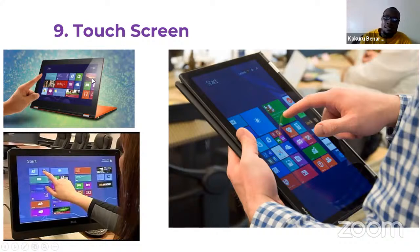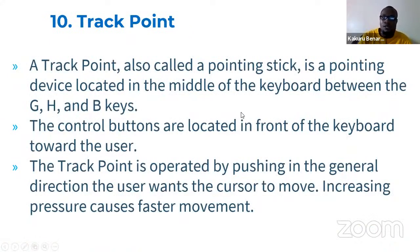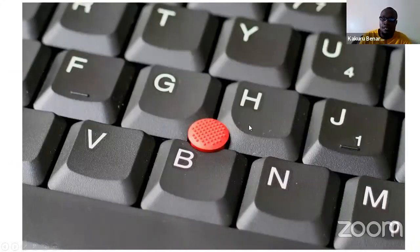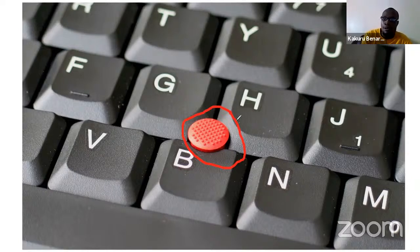Here is a touch screen computer — a 360-degree machine that can fold and turn into a laptop or tablet. All those are touch screen devices. Next is the track point, also called a pointing stick, located in the middle of the keyboard between the G, H, and B keys. The control buttons are located in front of the keyboard toward the user. The track point is operated by pushing in the direction the user wants the cursor to move; increasing pressure causes faster movement.